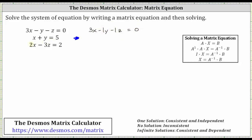Notice the second equation is missing the z term. Let's write the second equation as 1x plus 1y plus 0z equals 5.